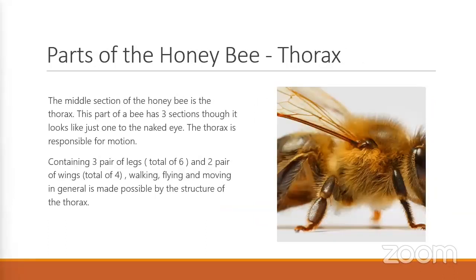Moving on to the thorax. Below the head is the thorax — this is where all of the movement for the honeybee comes from. That's where their wings are, that's where their legs are — that's how they move, that's how they get around. There are three body parts of a honeybee. There are three pairs of legs for a total of six, and two pairs of wings for a total of four. How they walk, how they fly, how they just move in general — all comes from this region.